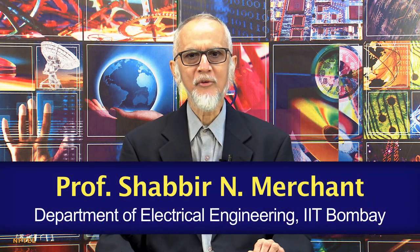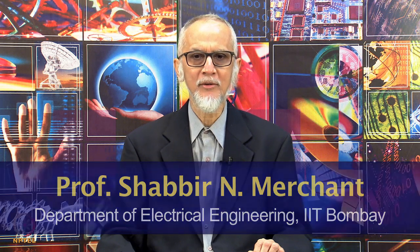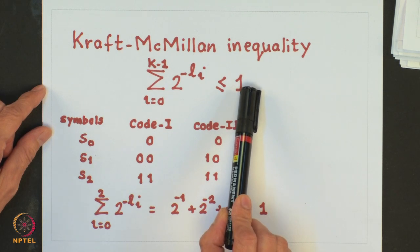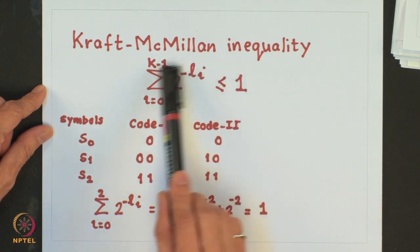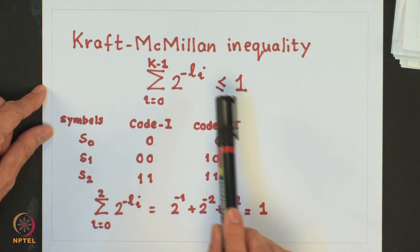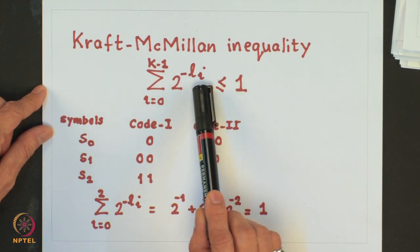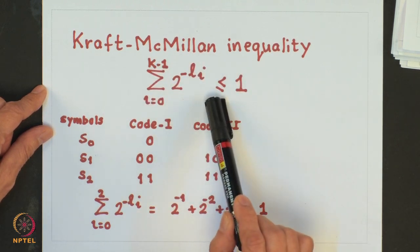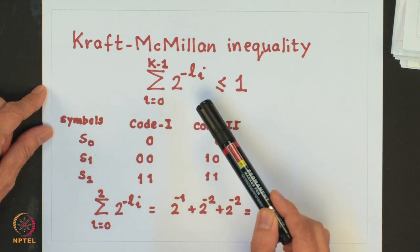Hello, welcome back. In the last class we studied prefix code which is a subset of a uniquely decodable code. We also saw that prefix codes and uniquely decodable codes satisfy what is known as the Kraft-McMillan inequality. The inequality basically states that all uniquely decodable codes should satisfy this inequality, and this is a necessary and sufficient condition. If I have a prefix or uniquely decodable code then this condition will be satisfied, and if this condition is satisfied then it is possible to generate a uniquely decodable or prefix code.